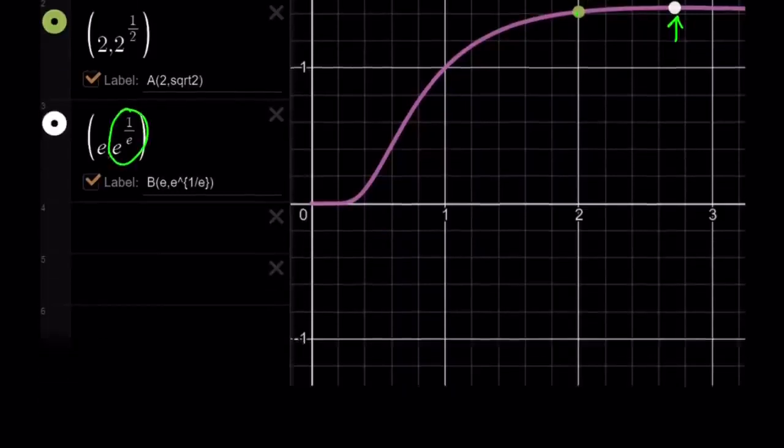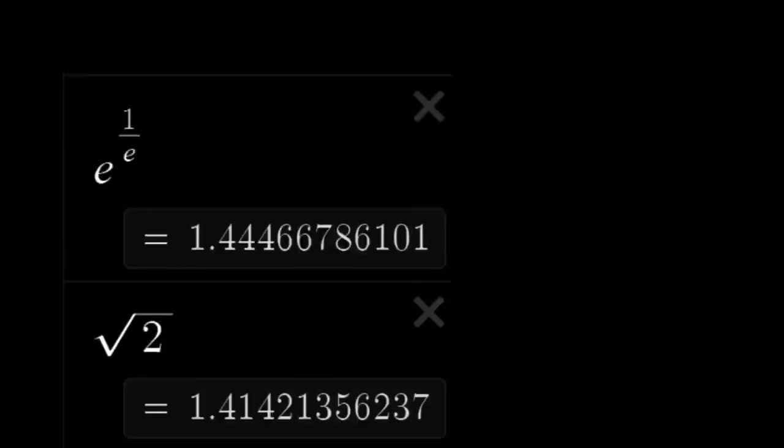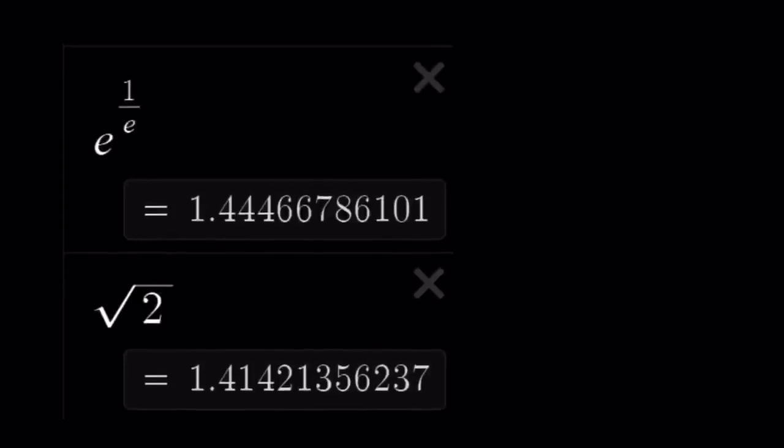Now let's go ahead and look at the numerical values. So e to the power of 1 over e happens to be this, and square root of 2, as you probably know already, at least a couple digits. They're pretty close, but e to the power of 1 over e wins the battle.